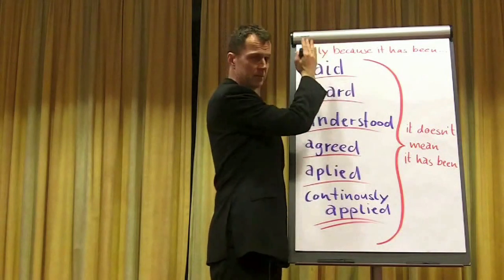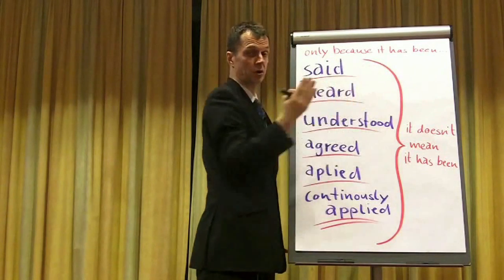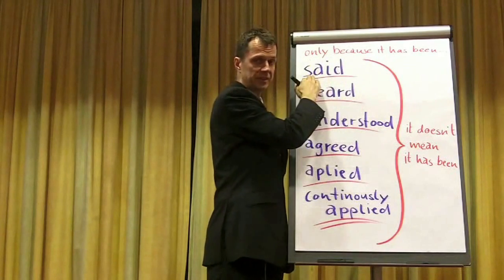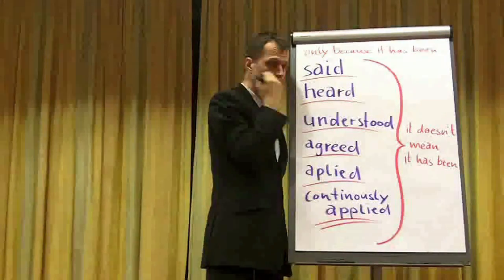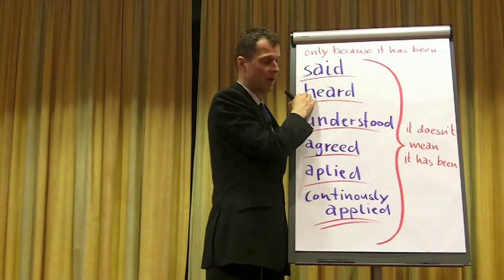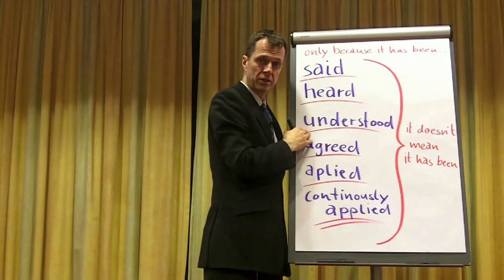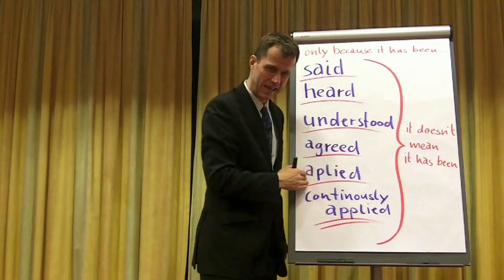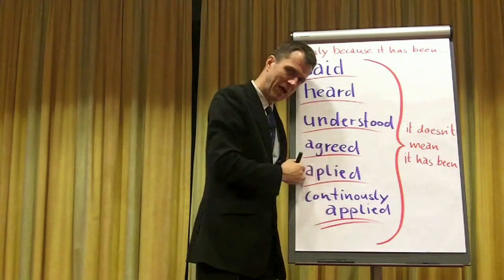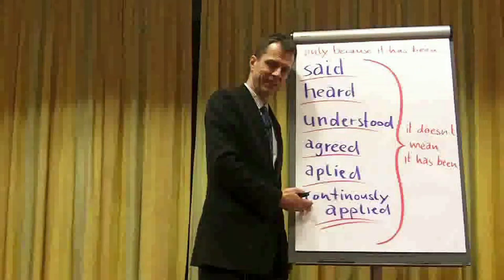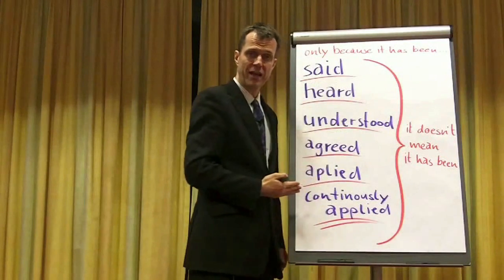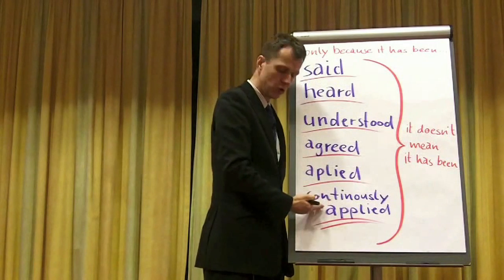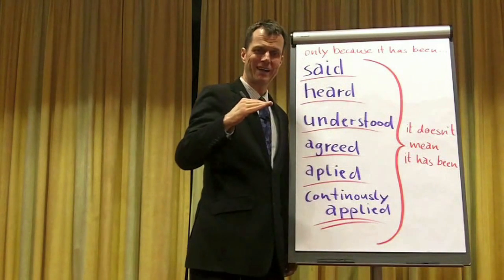What do I mean? Think about this: only because you have been saying the message, only because it has been said, doesn't mean it has been heard. People could hear it, or they understood, or they agree. Even if they agree, did they apply it? Did they apply it once or did they apply it continuously? For communication to be effective, ideally we reach level six — because then you've got a new behavior, a new standard, continuously applied.